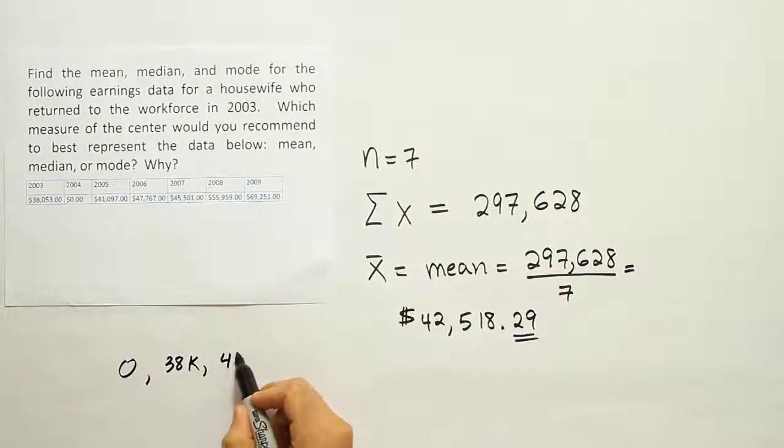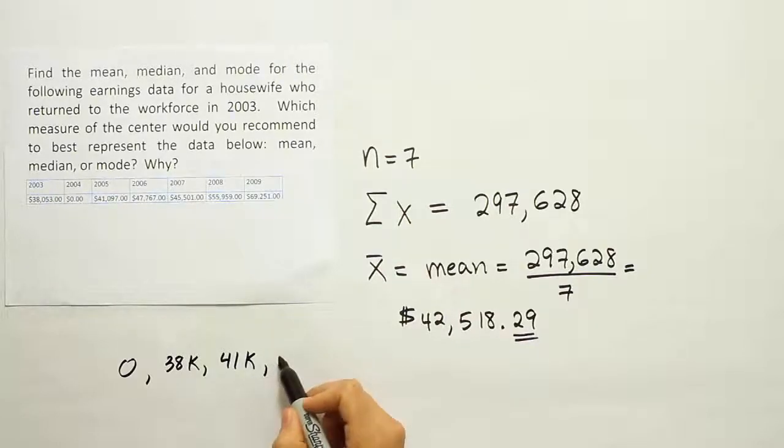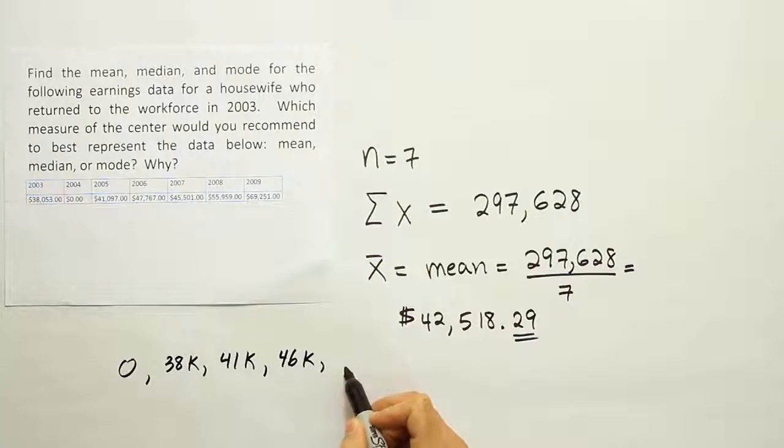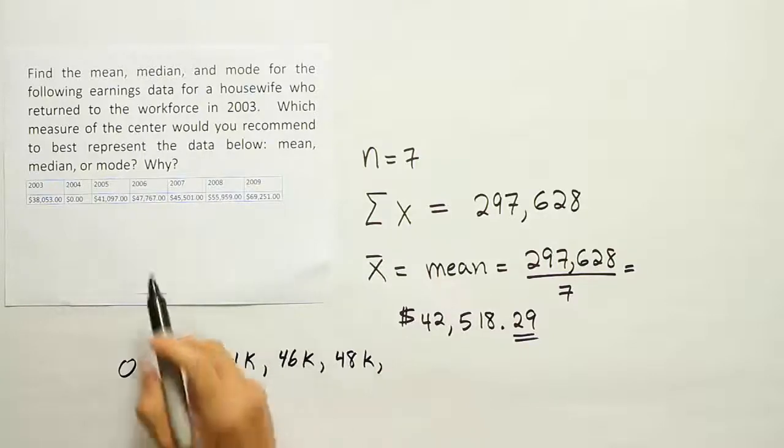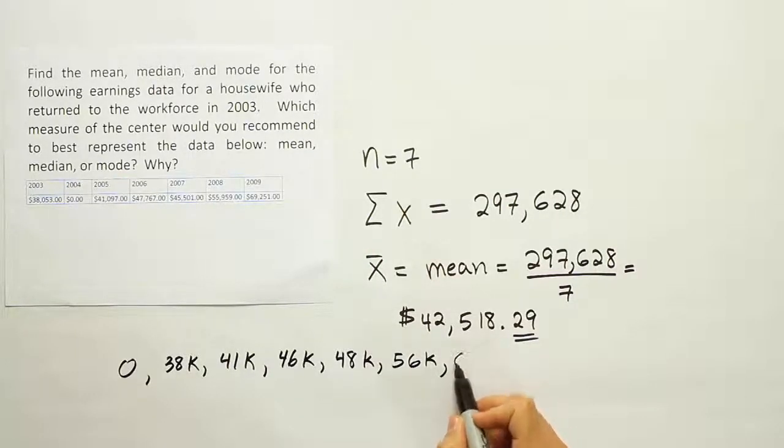Then the next number is 56K, and then 69K. So I count one, two, three, four, five, six, seven - I have all seven values. There are three values here, three values there.